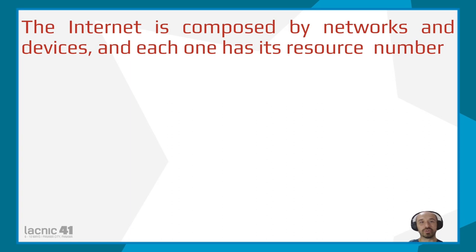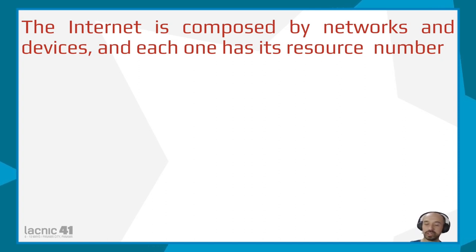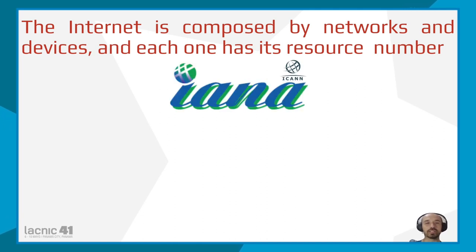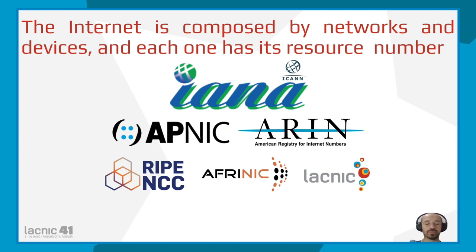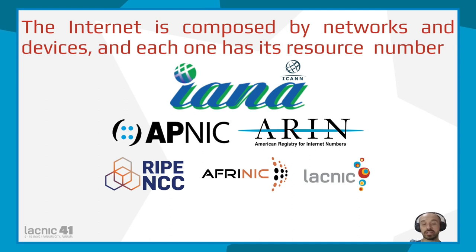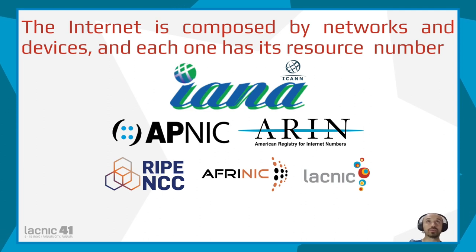Let's start talking about the goal and context of this research. We are going to talk about the resource numbers of the internet, because every network and every device on the internet should have a resource number, and someone needs to manage those numbers — and that's IANA. Below IANA, we have five other entities helping manage the resource space: APNIC, ARIN, RIPE NCC, AFRINIC, and LACNIC. Each one is a Regional Internet Registry responsible for some region of the globe.